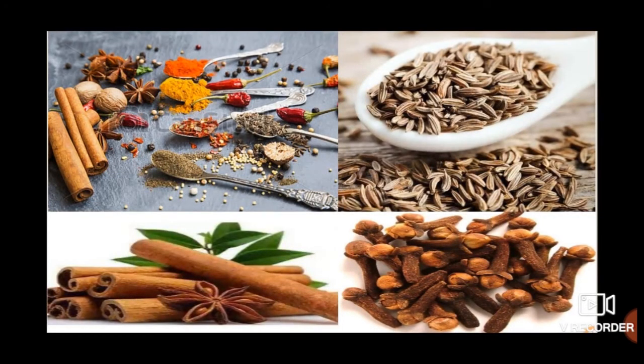A spice can be a dried fruit, seed, root or bark of a plant. Spices are used to add flavor and aroma to food. The seeds of mustard and cumin, and the barks of cinnamon trees are used as spices. The fruit and seeds of cardamom are added to tea as well as food. The stem of the turmeric plant is crushed into a powder. It adds yellow color to the dishes prepared in the kitchen.